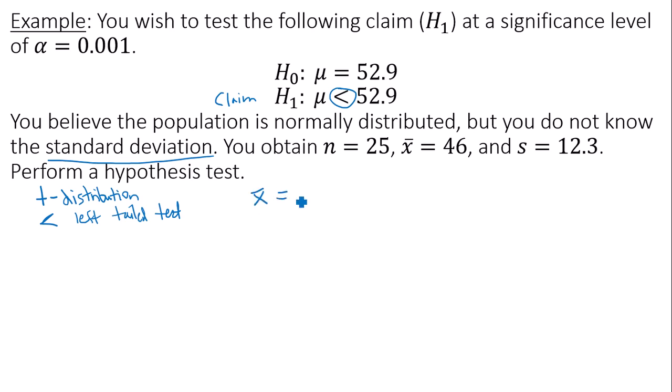In Google Sheets, you'll want to type in x bar, which is 46. You'll want to type in the sample standard deviation, 12.3. You'll want to type in a sample size of 25. Your population mean value in question, mu naught, is 52.9. And then your null hypothesis sign is less than.